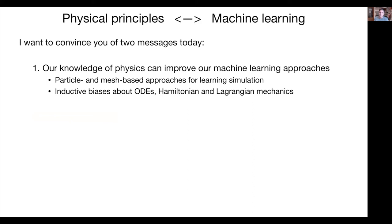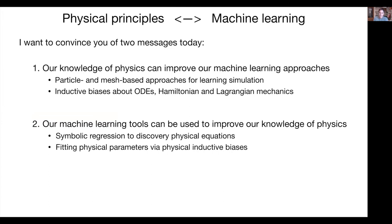I want to convince you of two things: first, that our knowledge of physics can improve our machine learning approaches. I'll show several pieces of work to help convince you. Second, that our machine learning tools can improve our knowledge of physics. Specifically, we'll make choices about representation, use inductive biases from mechanics formulations — ODEs, Hamiltonian mechanics, Lagrangian mechanics — and then going back into physics, we'll do symbolic regression against trained models to recover physical formulas and semantically meaningful physical parameters.